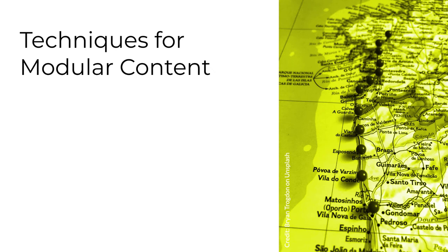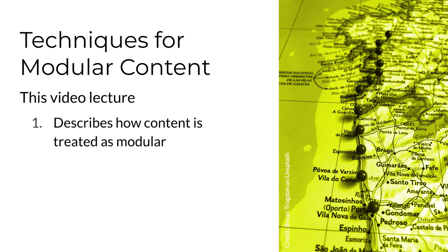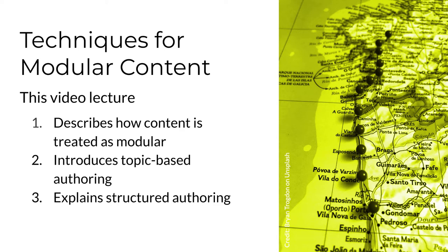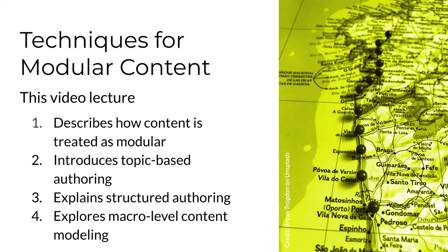This lecture has four parts. I'm going to begin by describing how content is treated as modular. Second, I'll introduce topic-based authoring as a technique for creating modular content. Third, I'll explain how structured authoring techniques create better modular content. And fourth and finally, I'll explore how a model of all content can be used to maximize the likelihood users will find the module of content they need.